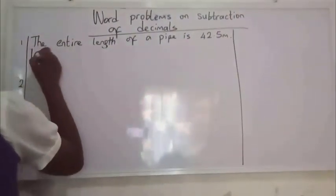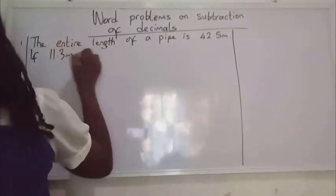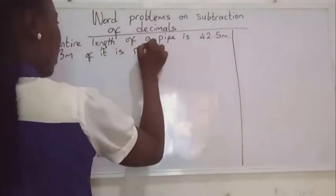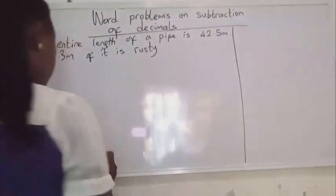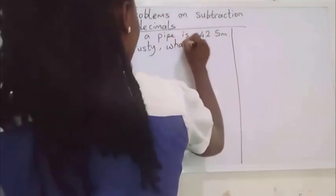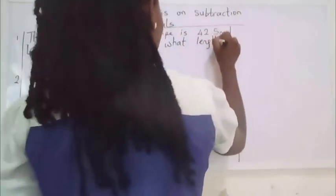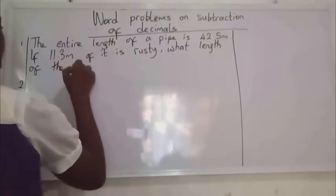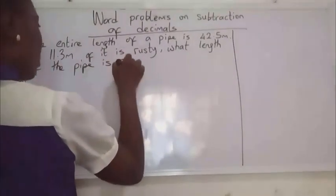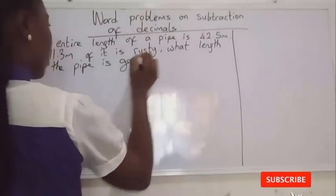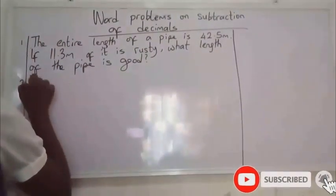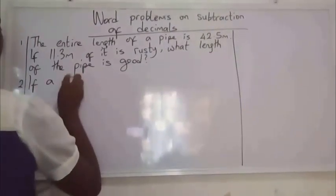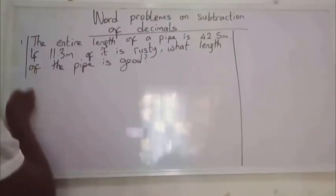Question one: if 11.3 meters of a pipe is rusted, what length of the pipe is good? Let's solve this quickly before we move on to number two.